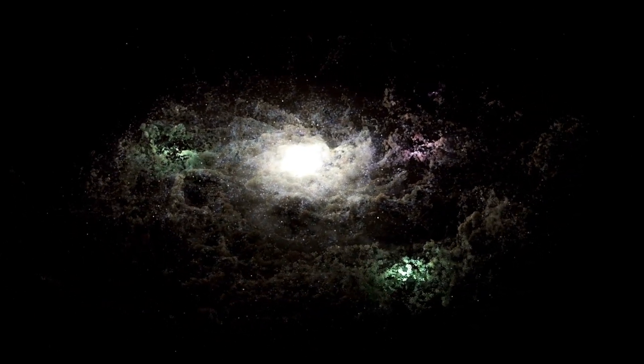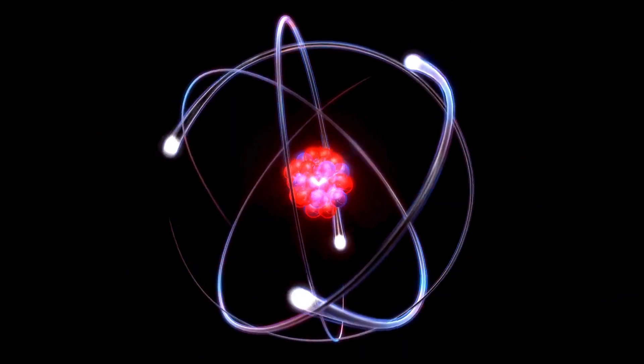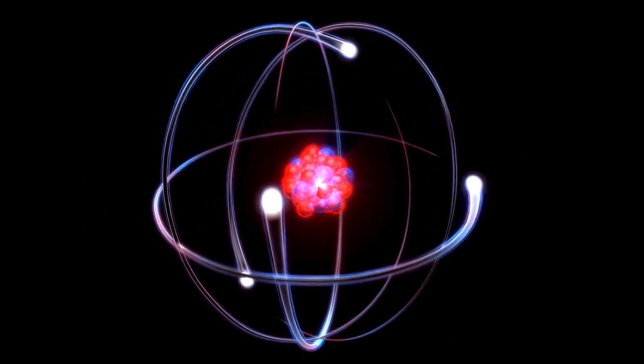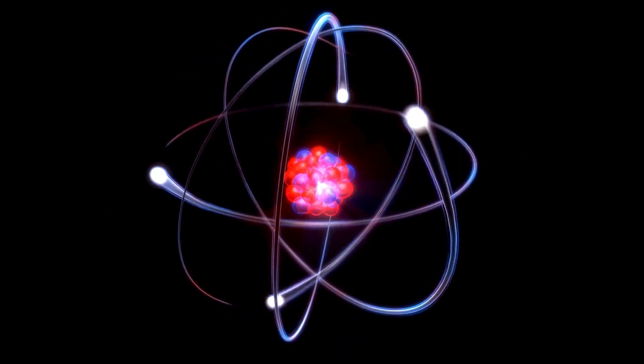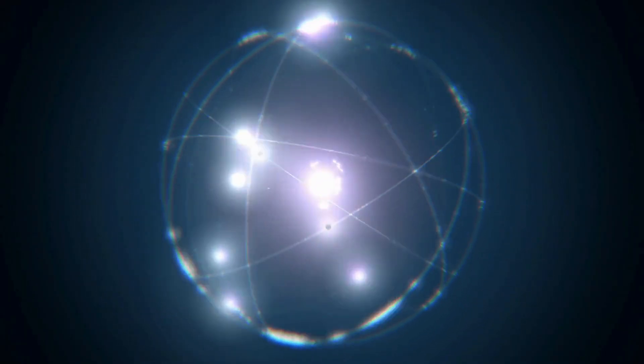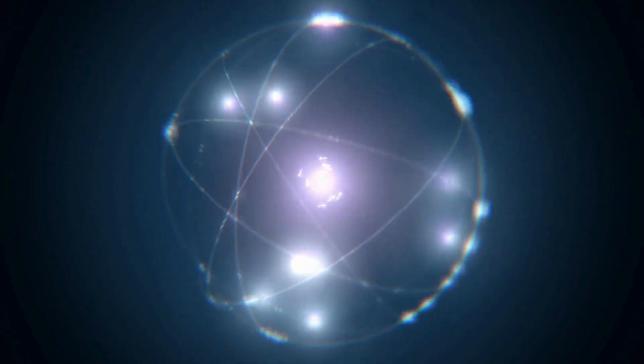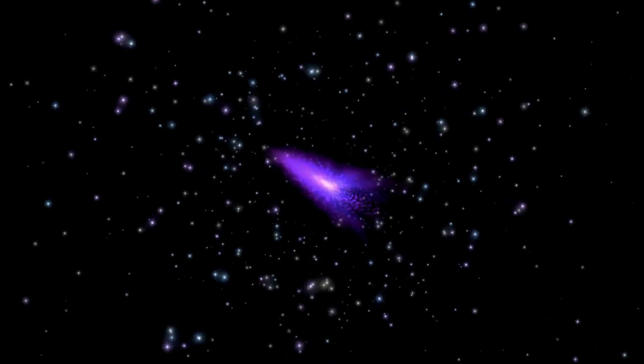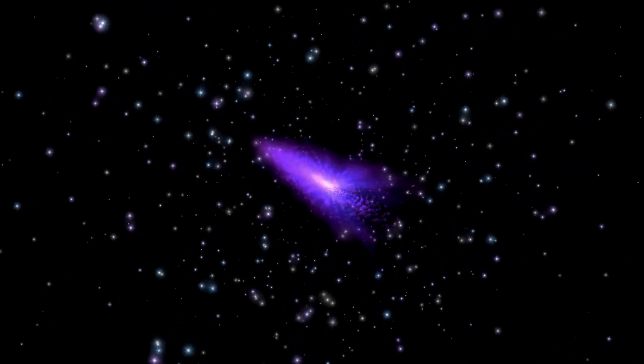Here's the deal. Dark matter doesn't play nice with light, which makes it invisible. None of that typical stuff like electrons or protons. It's different. Scientists can't see it directly, but know it's there because it messes with gravity. Dark matter has mass, and gravity means saying, hey, I'm here.